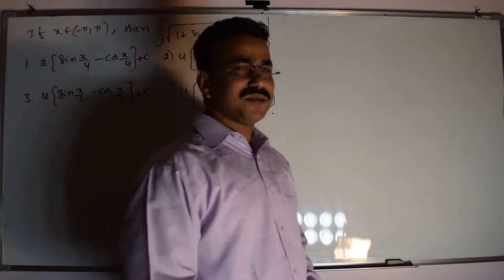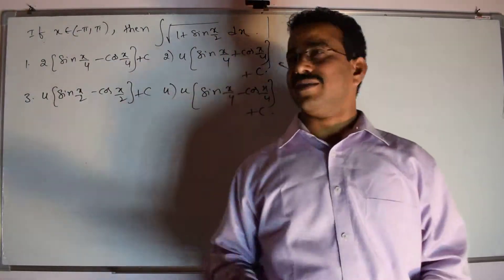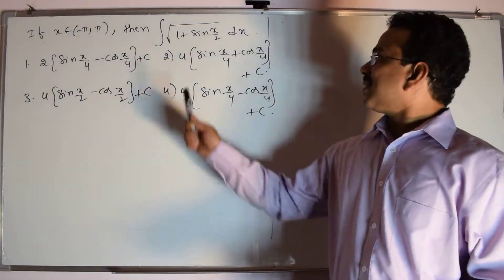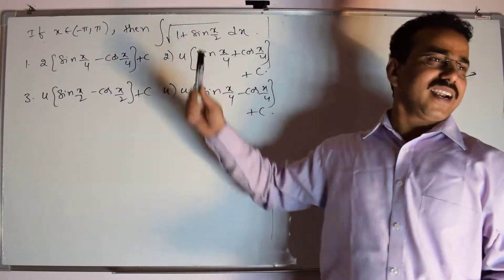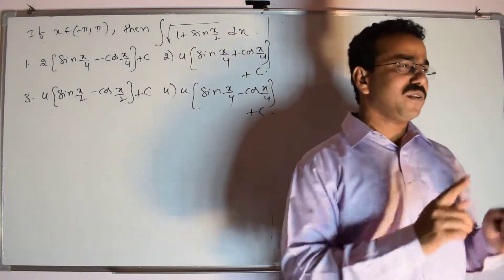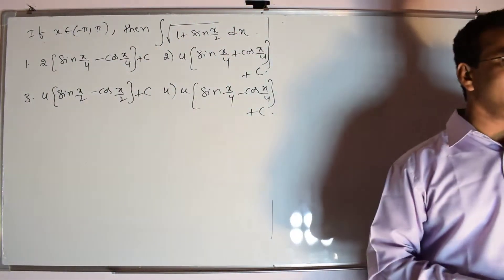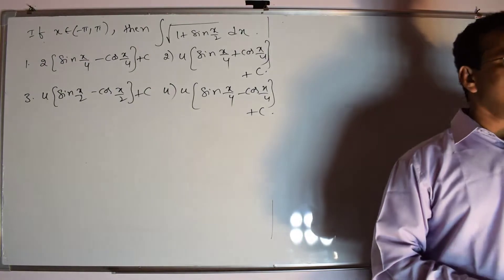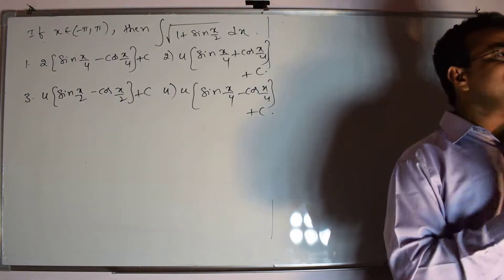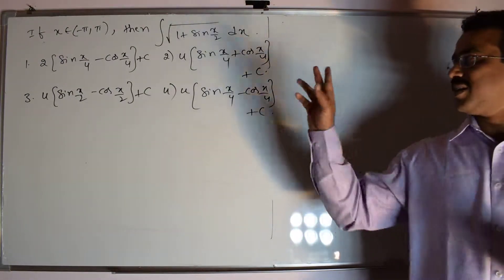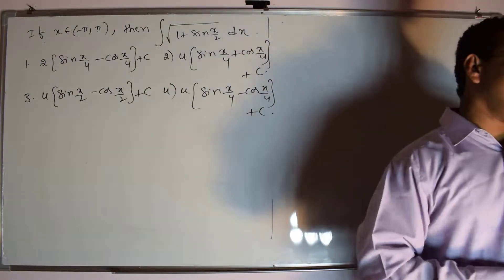Hi, let us see how to solve this question. The given integrand is square root of 1 plus sin(x/2). Our primary task is to eliminate the square root.